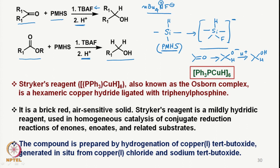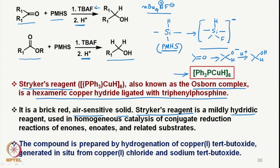There is another reducing agent called Stryker's reagent, which contains a copper hydride. Basically, it is a hexameric copper hydride reagent ligated with triphenylphosphine, and it is also called the Osborne complex. It is a brick-red air-sensitive solid. Stryker's reagent is mildly hydridic because hydrogen is attached to copper, and therefore it is relatively soft due to the copper being present.